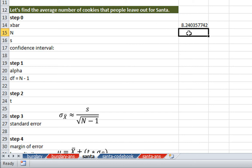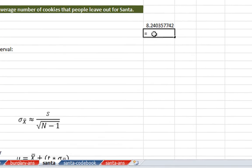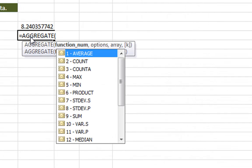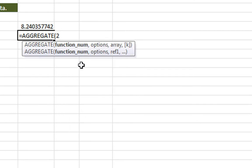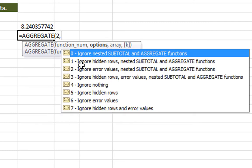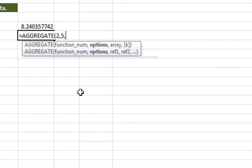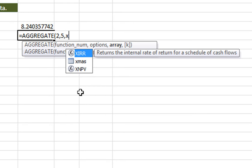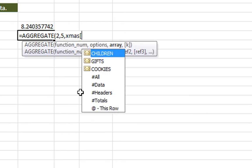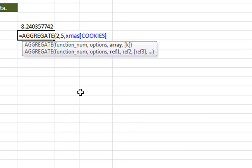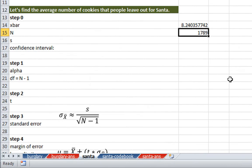Now, how many people are there? Again, we can use the aggregate function and we can count up the number of people. We want to hide the hidden rows. We want to count up the valid data. Our data is Xmas, opening bracket, cookies. So there are 1789 people in the sample and they've left out an average of 8.24 cookies.